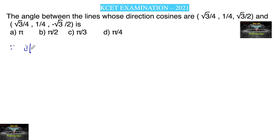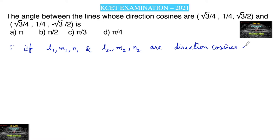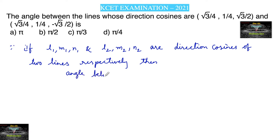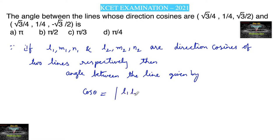Since we know, if l1, m1, n1 and l2, m2, n2 are direction cosines of two lines respectively, then the angle between the lines is given by: cos θ = mod of (l1·l2 + m1·m2 + n1·n2), where θ is the angle between the lines.